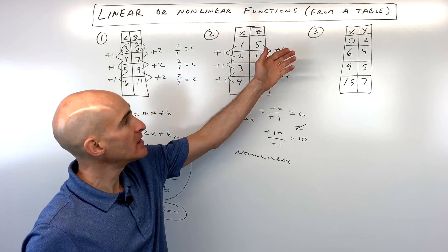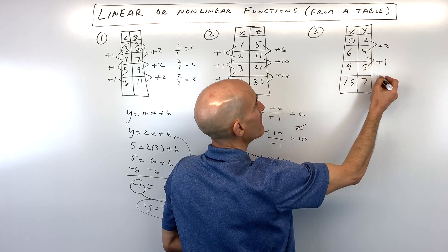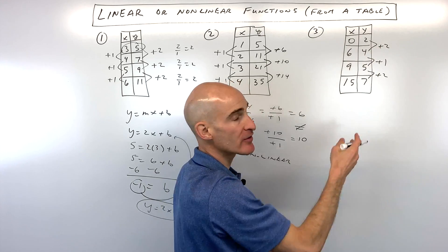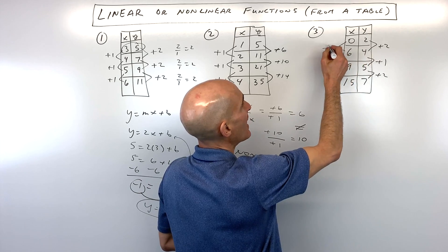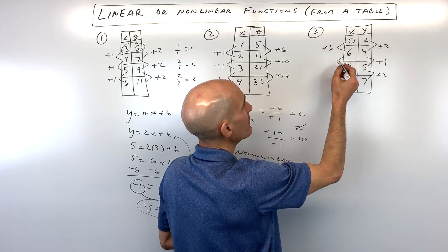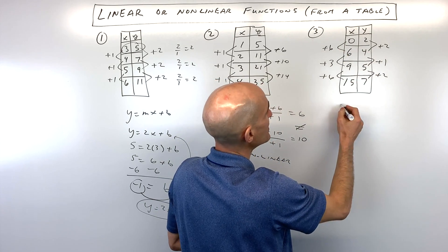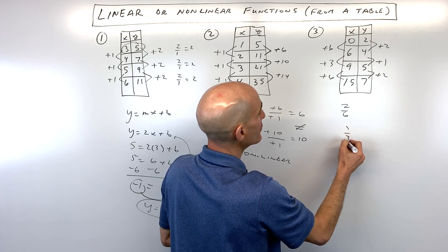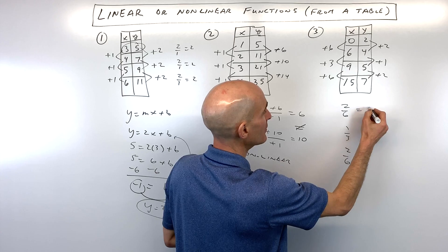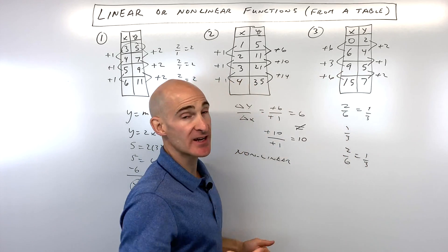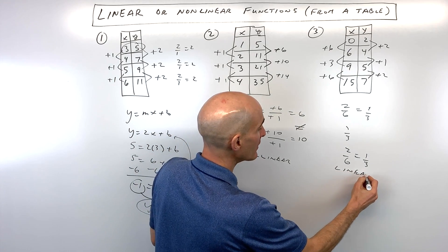Last example, number three. The y-values go up by two, then one, then two — those changes vary. But what matters is the change in y over the change in x. Here the slope is six over one equals six-sixths... wait — the change in y over change in x gives us two over six, then one over three, then two over six. Two over six reduces to one third, so we get one third equals one third equals one third. It's going up at a constant rate with a slope of one third — this is linear.